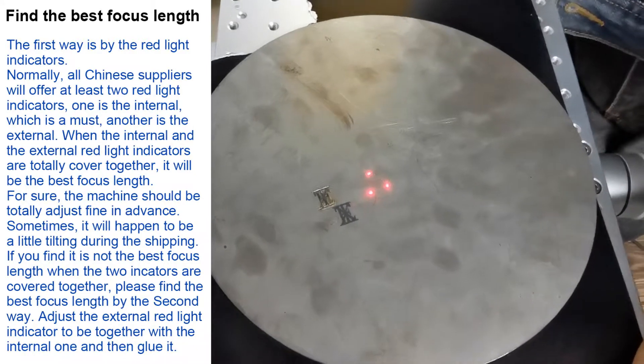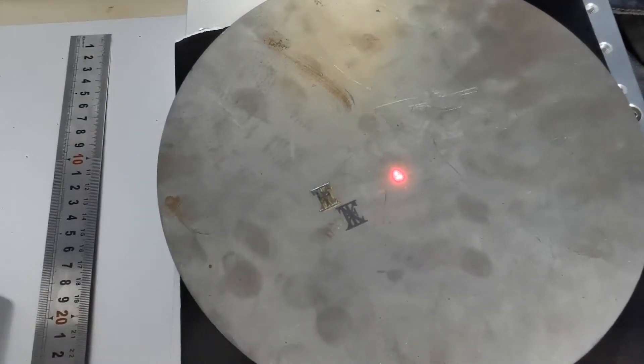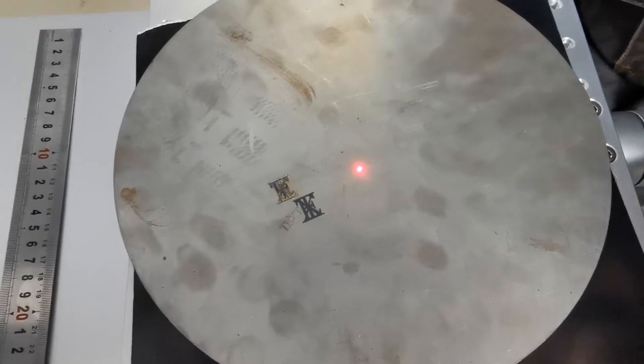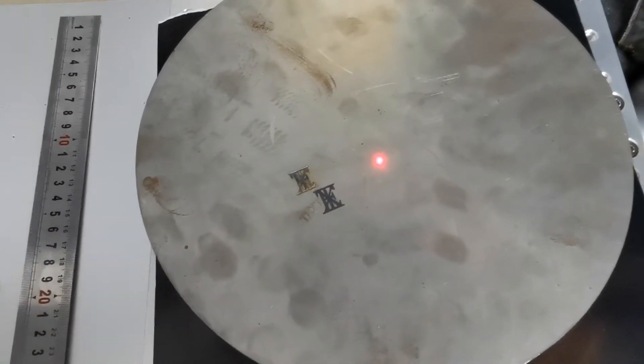The first method is when the three red light spots are totally covered together. That position is the best focus length and the marking result will be the best at this position.